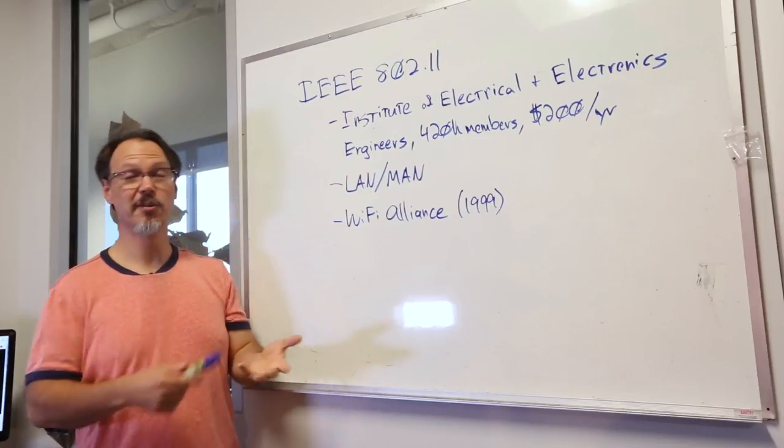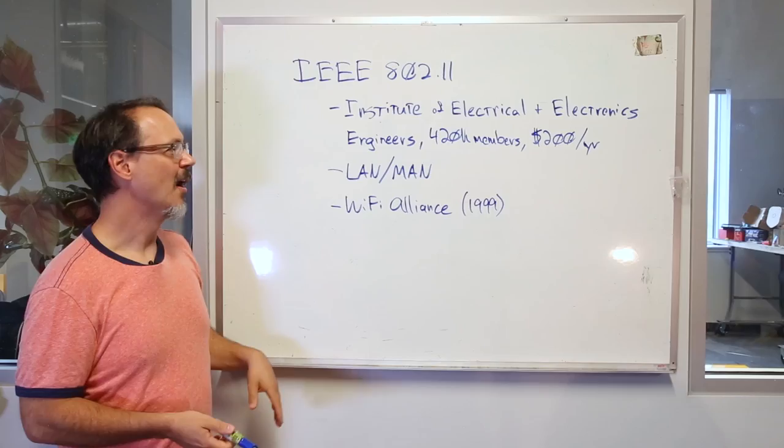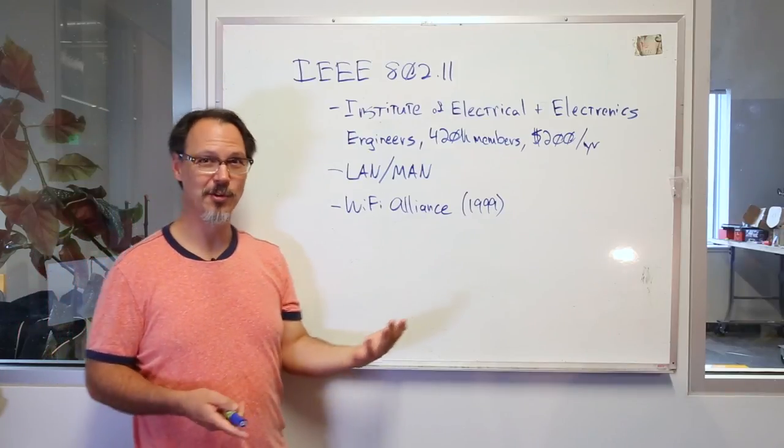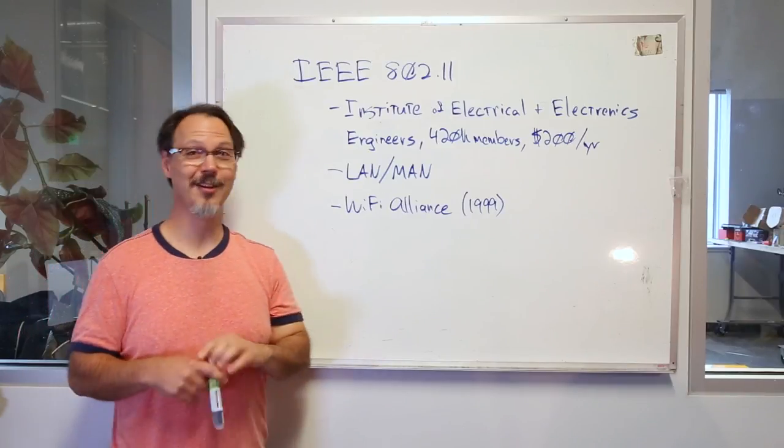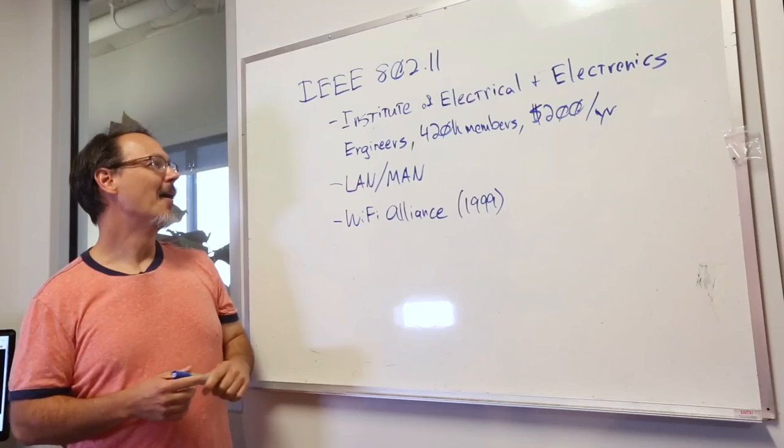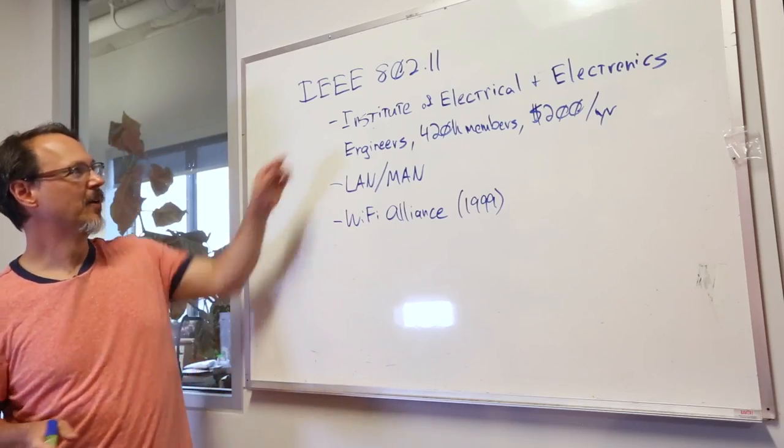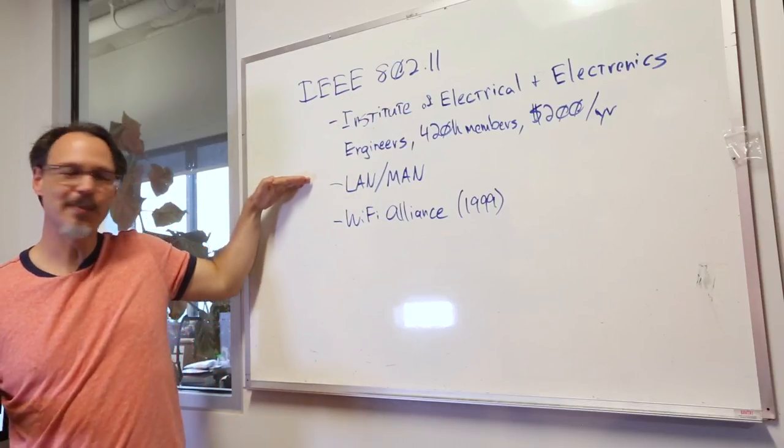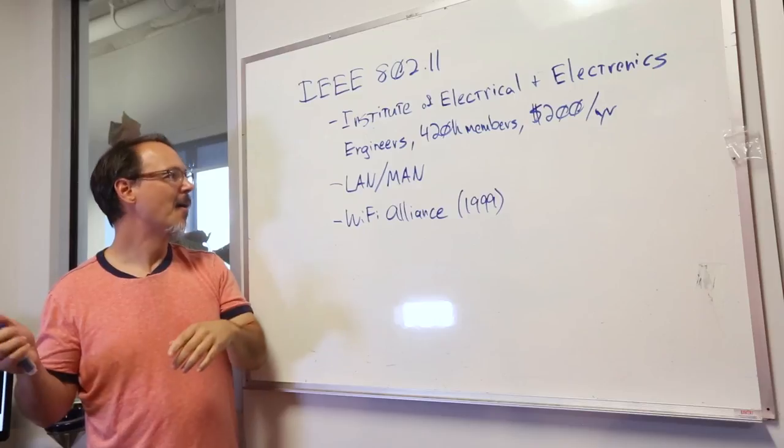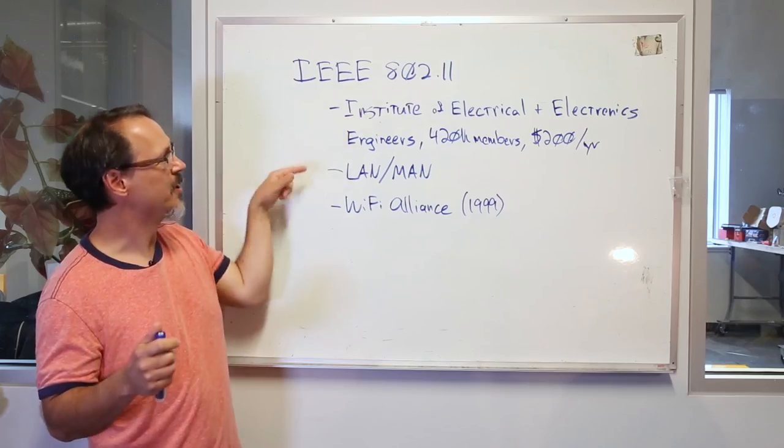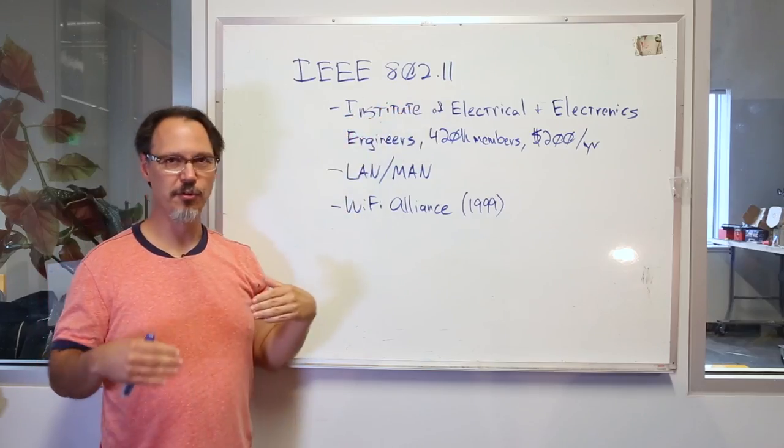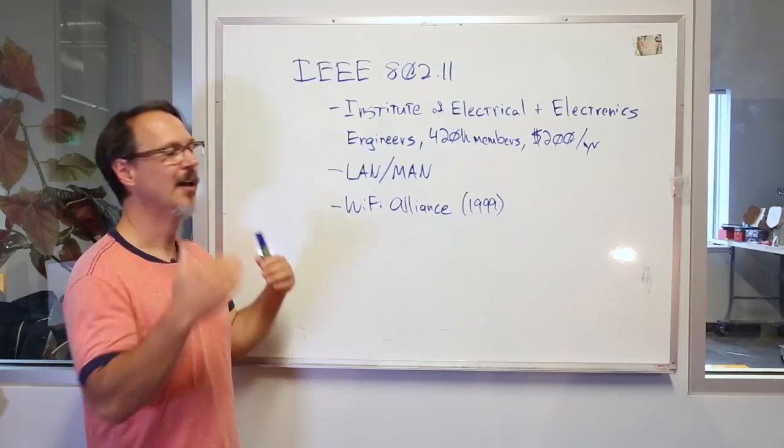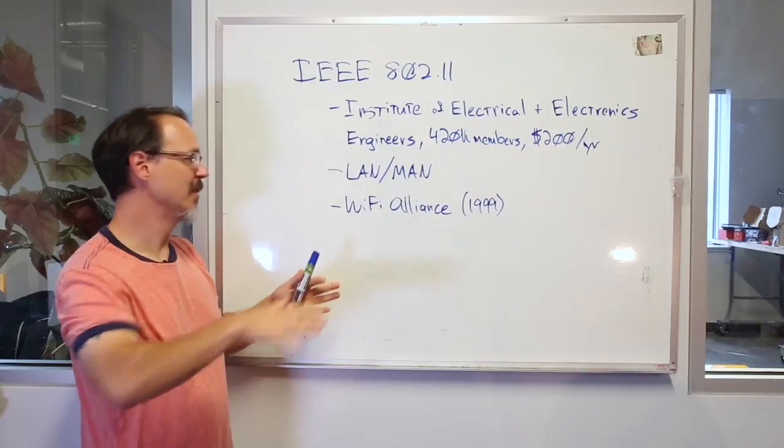If you're from another country it's less money. If you're a student it's way less money. Nonetheless there is a group, the 802 group, which handles LAN/MAN specifications. 802 refers to them. 11 refers to Wi-Fi specifically. So everything that has to do with Wi-Fi specifically is under 802.11. That's what that means.